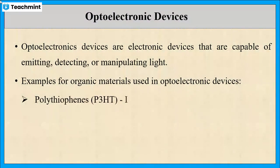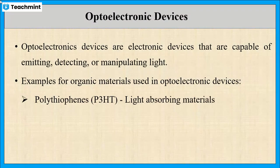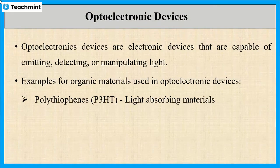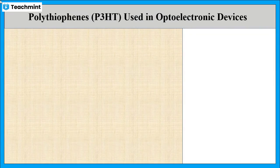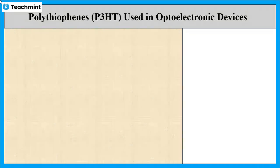Some examples are polythiophenes, or P3HT, which is a light absorbing material. One more example is poly-N-vinylcarbazole, or PVK, which is a light emitting material. Now first, let us discuss about polythiophenes, or P3HT, which is used in optoelectronic devices.